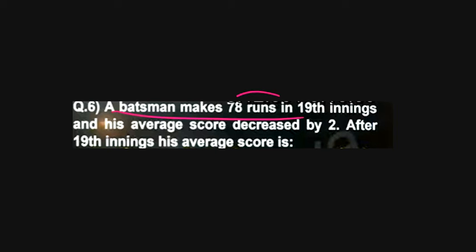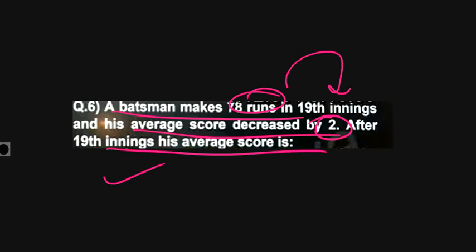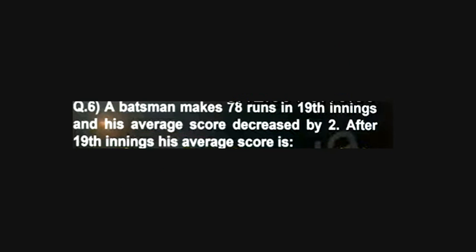The question is: a batsman makes 78 runs in the 98th inning, and his average score decreases by 2 after the 98th inning. What is the average score?